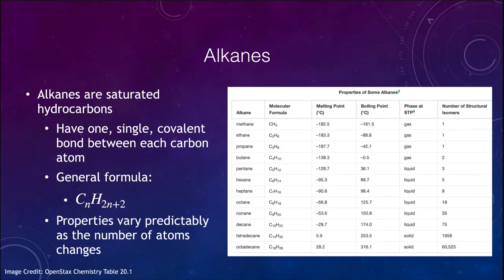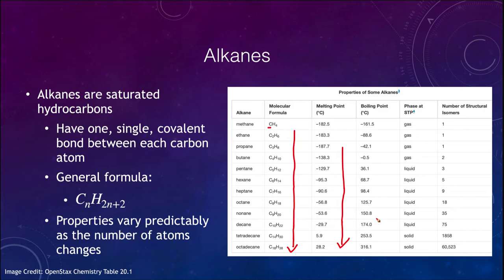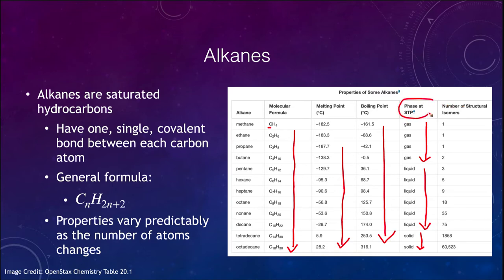We can make a table of some of these, starting with the very simplest, methane, which is just one carbon atom, and increasing the number of carbon atoms up to 18. The properties change in a predictable pattern: the melting point tends to get larger as you go down the table, the boiling point also gets larger, and the phase changes from gas for the simpler ones, then liquid, then solid at standard temperature and pressure. The number of isomers also increases greatly as you move from simple to more complex alkanes.